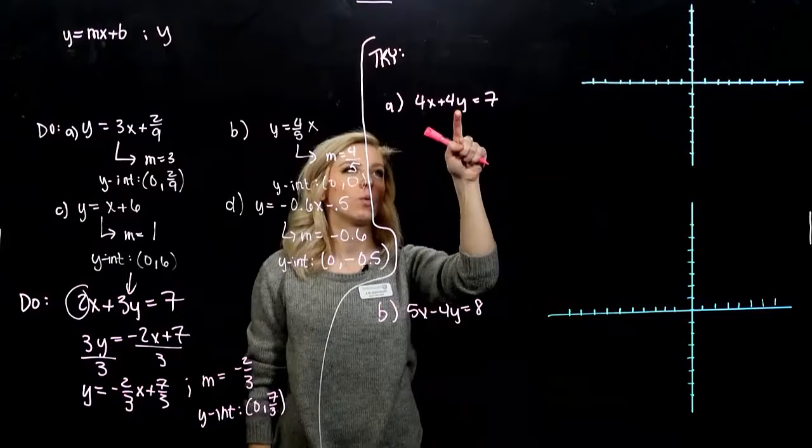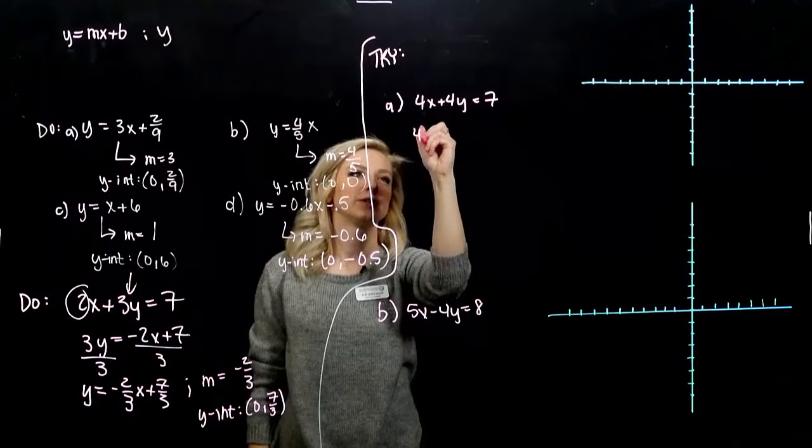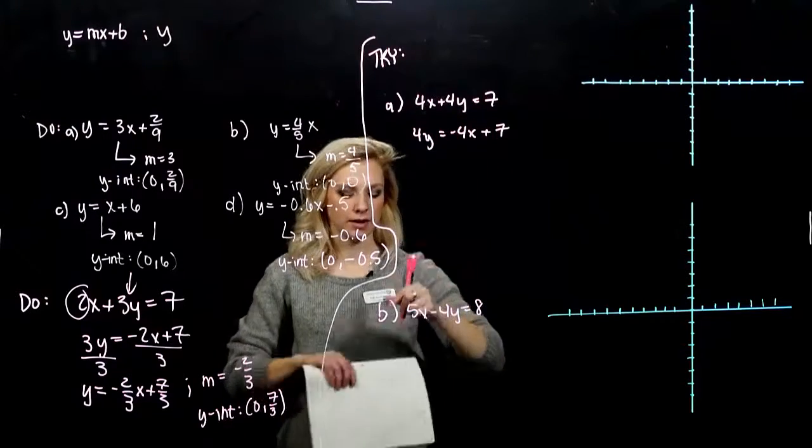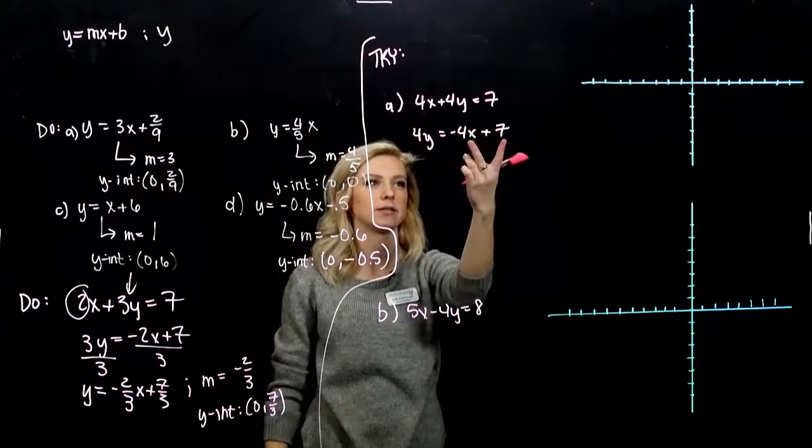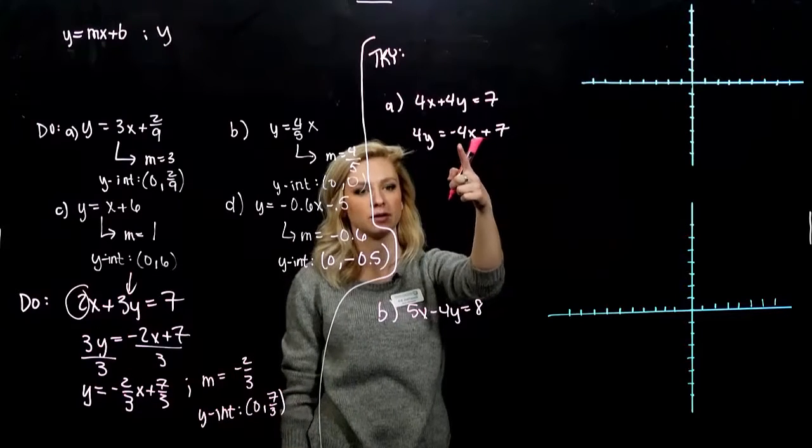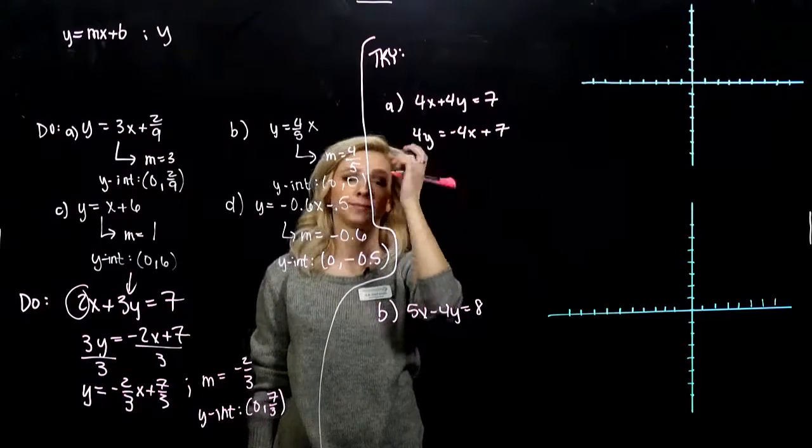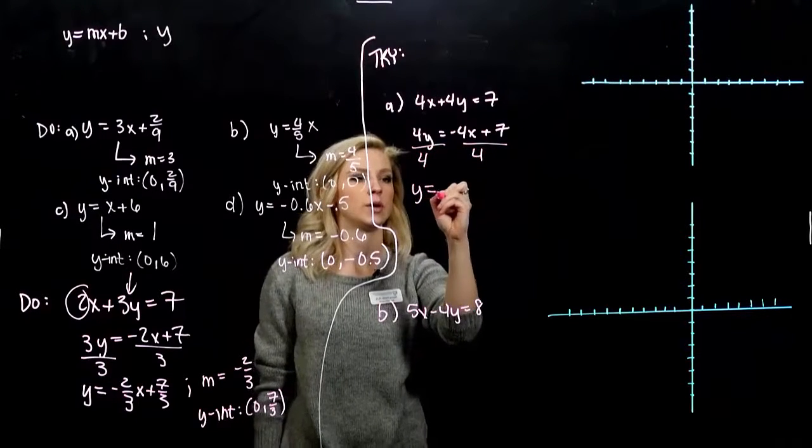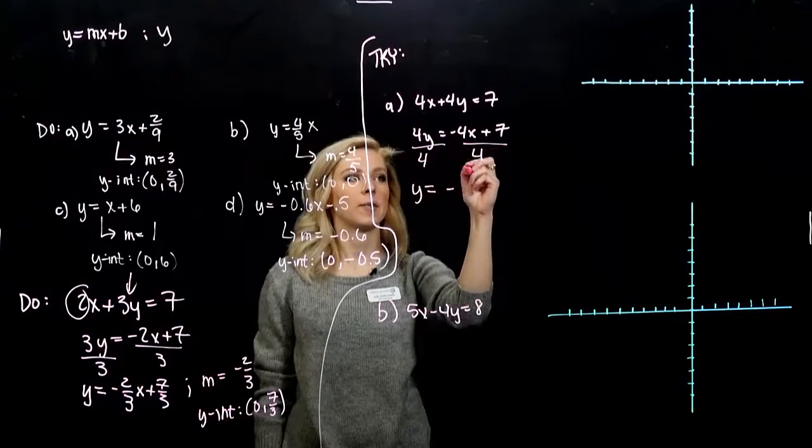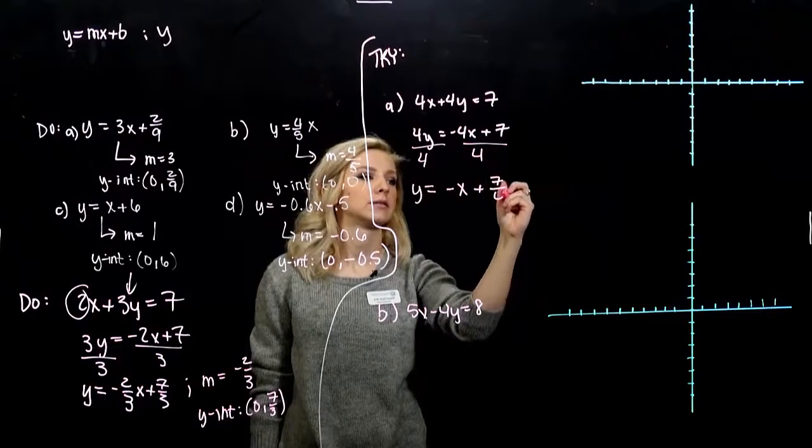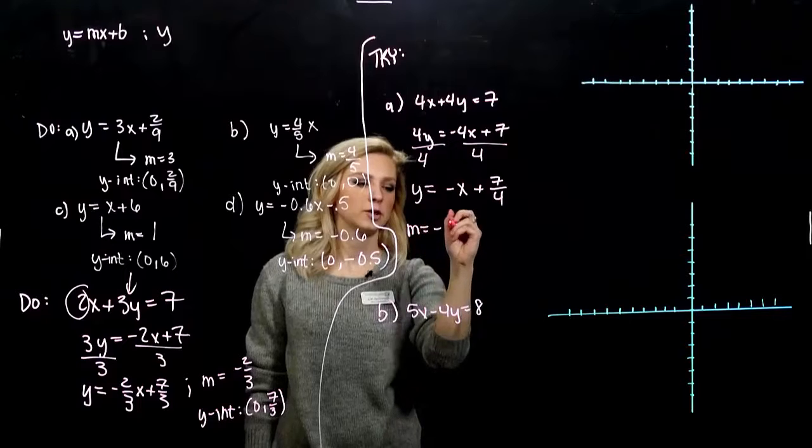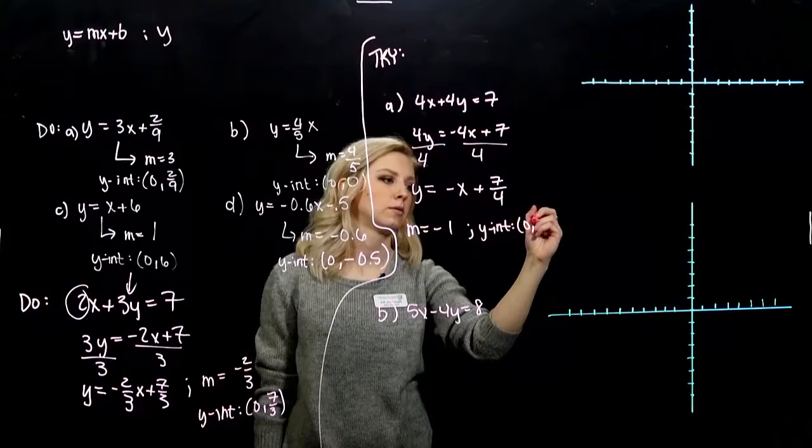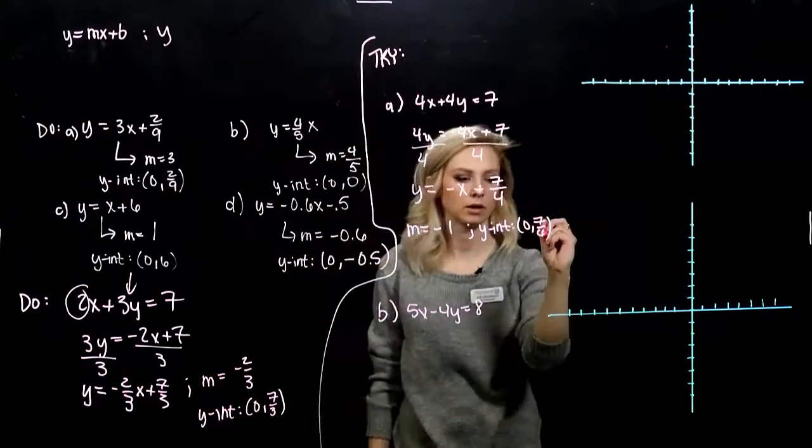So slope isn't 4. We need to get y on its own. I'm going to subtract 4x from both sides. Generally, we write the x term first. So you don't actually think the slope is 7 instead of the coefficient on x. But it's not actually either of those yet. We need to solve for y. So y is equal to minus 4 divided by 4. So it's just minus 1 plus 7 fourths. So slope is minus 1. Y-intercept was where? 0, 7 fourths.